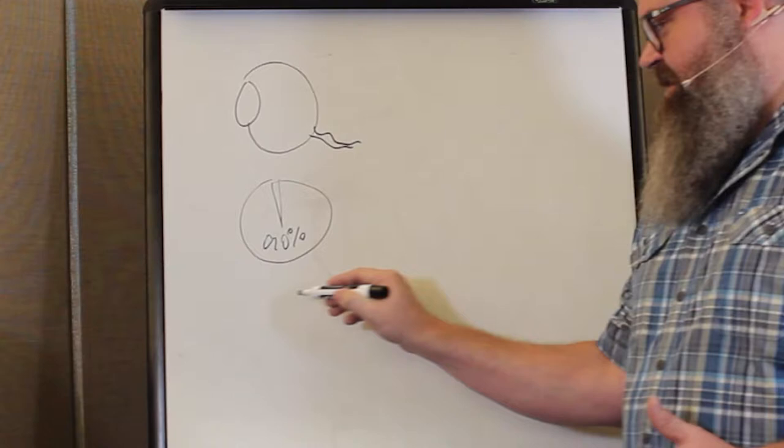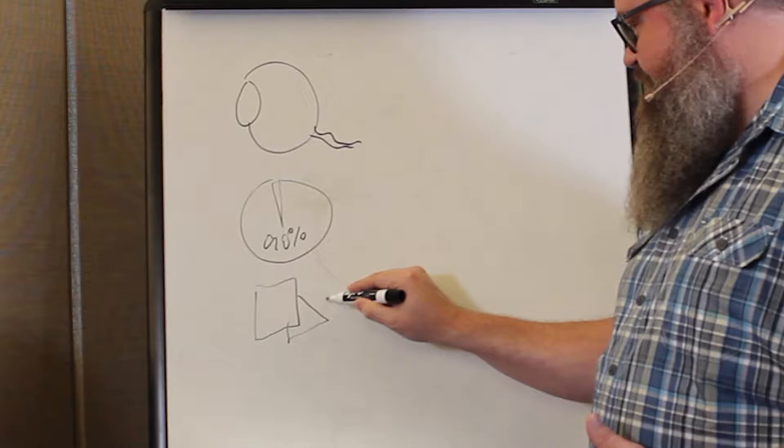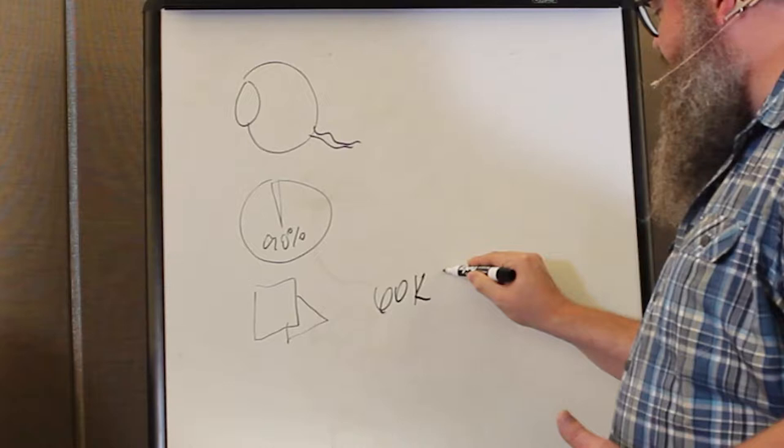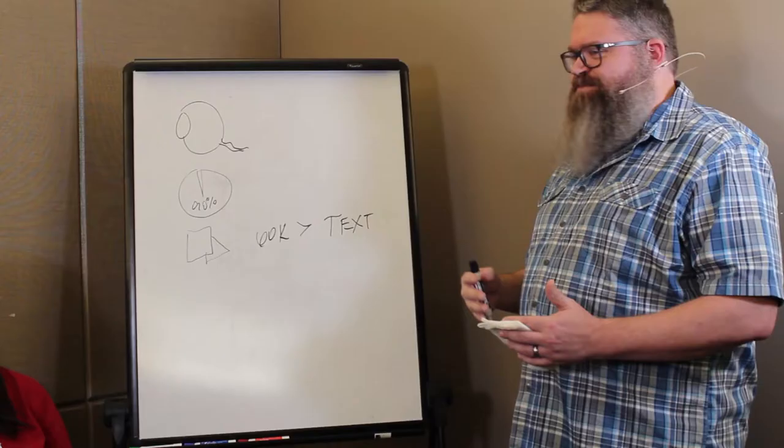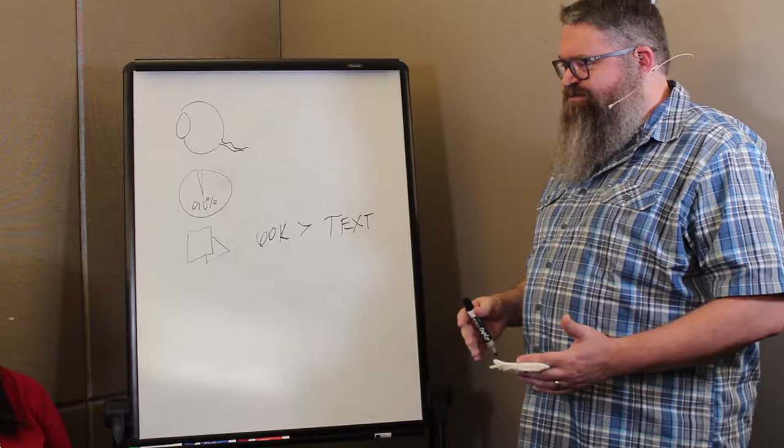And about 90% of the data that our brain receives is visual information. And our brains can process images and visual information about 60,000 times better than text.